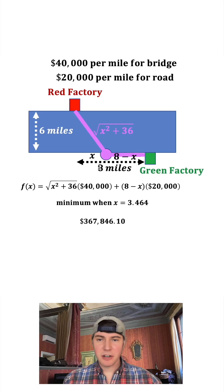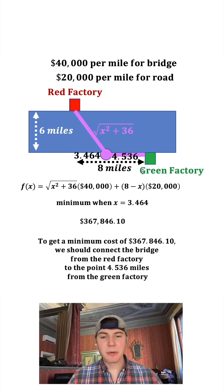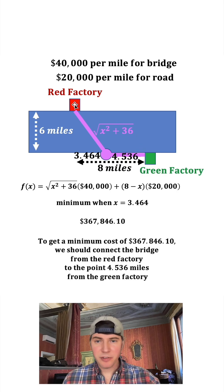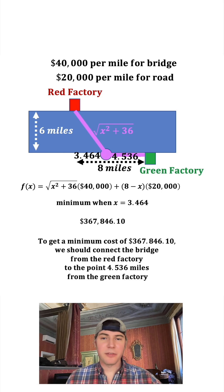Let's update our visual. This x is 3.464, that'll make this piece 4.536. So in conclusion, to get the minimum cost we should make a bridge from the red factory to the point that is 4.536 miles from the green factory. How exciting!